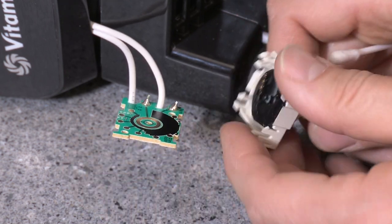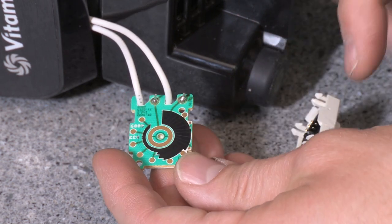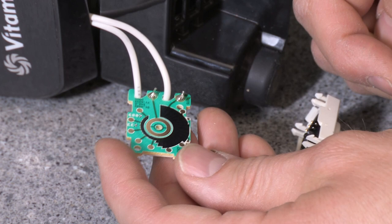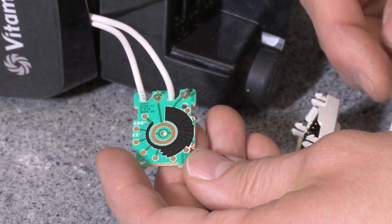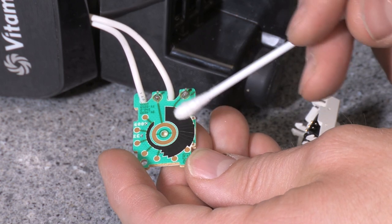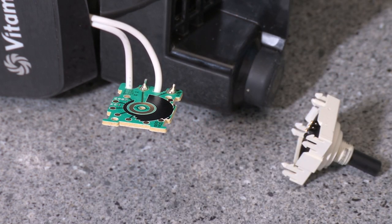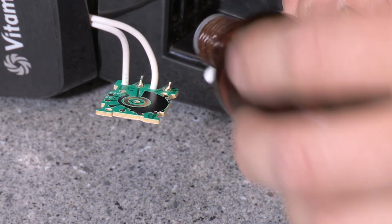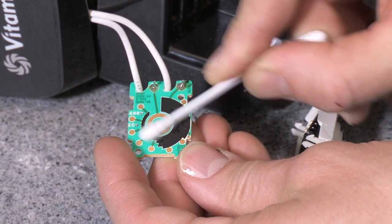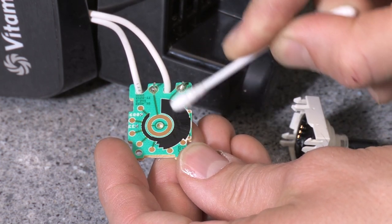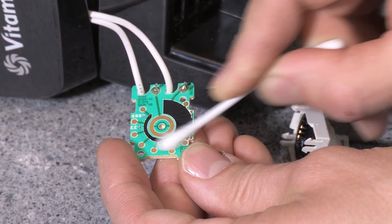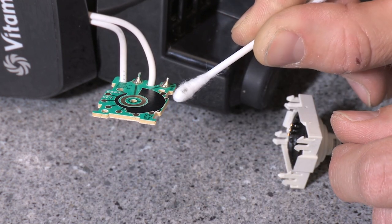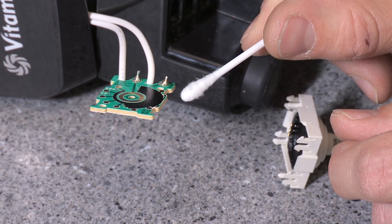Now you can imagine if you turn the knob back and forth many times, the carbon might wear out and get some damage. And in that case you can't do anything. You have to replace the potentiometer. But if it's only dirty or something, you might have a bad contact. And then it might help using rubbing alcohol to clean it out like this. And you can see on the cotton swab, there's a little bit of black stuff. So it was dirty.